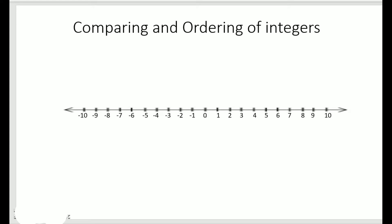Hello students. In this video we shall learn comparing and ordering of integers. Here we have a number line, and the dots on the number line mark the integers from negative 10 to positive 10. We have zero in the middle, positive integers on the right hand side, and negative integers on the left hand side.